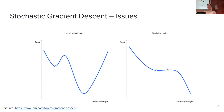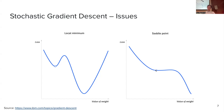We also have saddle points — flat areas where the gradient is zero but these are not global minima. The good thing about neural networks is that the loss surface has many local minima that are almost as good as the global minimum, so this optimization works in the end even without convex optimization.